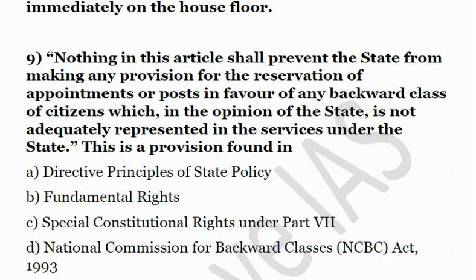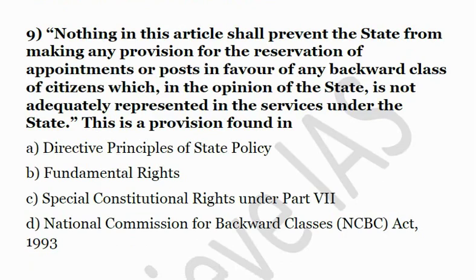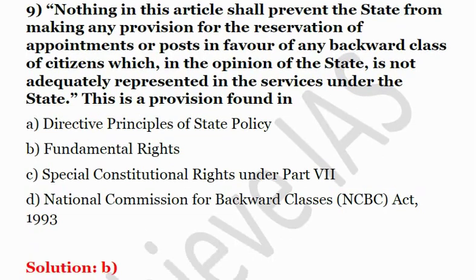The ninth question presents a provision: 'Nothing in this article shall prevent the state from making any provision for the reservation of appointments or posts in favour of any backward class of citizens which, in the opinion of the state, is not adequately represented in the services under the state.' In which part is this provision found? The answer is B — Fundamental Rights. Specifically, this is Article 16, sub-clause 4, which is part of the Fundamental Rights.